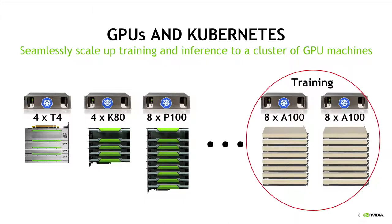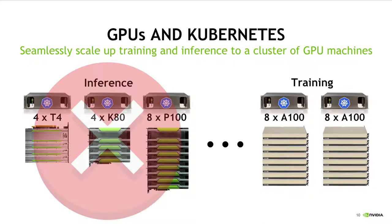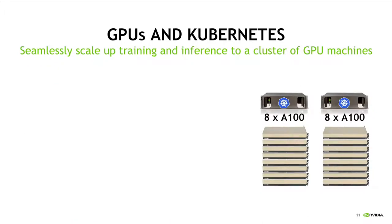A typical GPU cluster then looks something like this, where you have a bunch of servers, each hosting some number of possibly heterogeneous GPUs, all being managed under a single Kubernetes instance. Where training jobs tend to require multiple more powerful GPUs, and inference or development jobs tend to only require a single instance of a less powerful GPU.